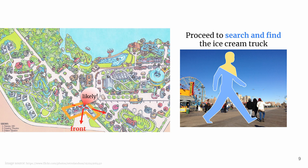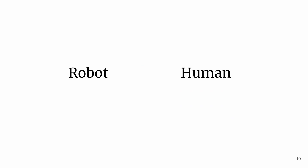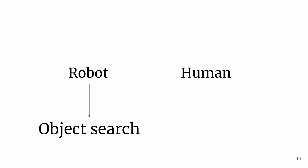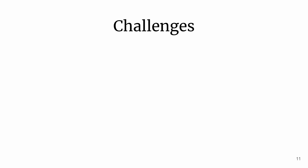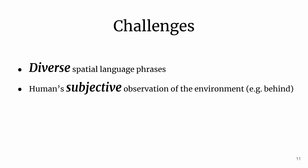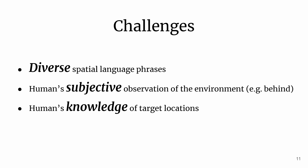If, instead of you, a robot is tasked to search for an object and is faced with the same situation, we believe that having the ability to understand spatial language provided by a human not only makes use of the prior knowledge possessed by the human, resulting in better task performance, but also reduces the barrier of interfacing with the human. However, doing so is challenging because humans produce diverse spatial language phrases based on their subjective observations and experience of the environment, as well as their knowledge of the target locations — and none of this is available to the robot.